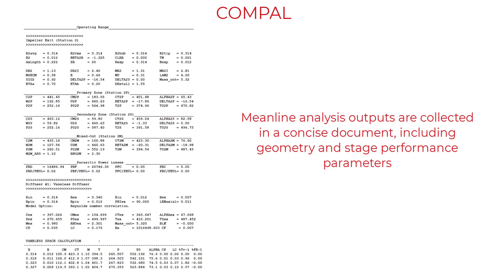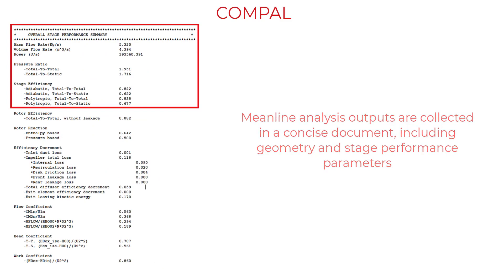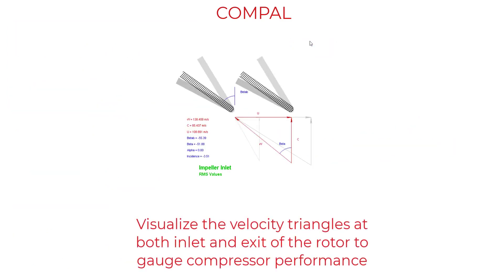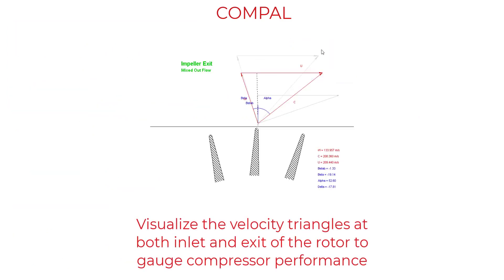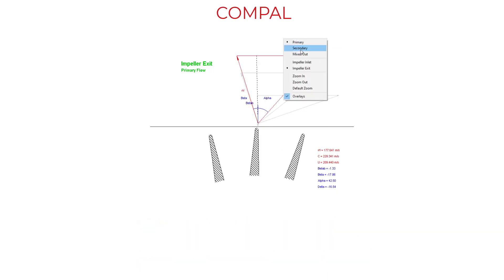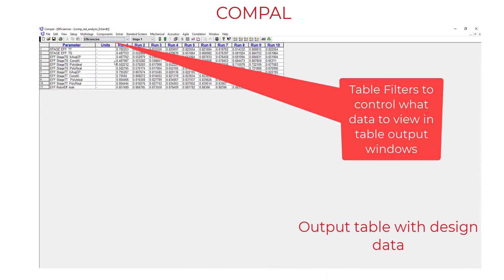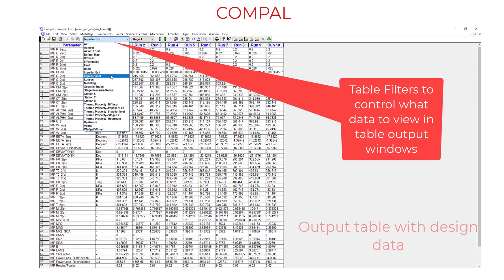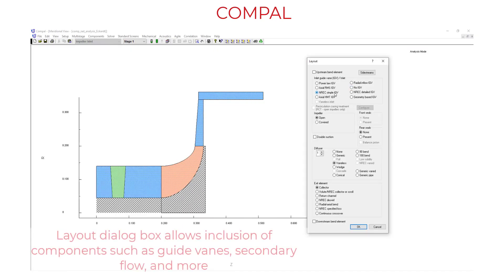An analysis of that design will be in a concise text document, where you can see your initial results. You can look at things like velocity triangles at the hub, mean, and shroud, or look at any number of output parameters in a filter table.